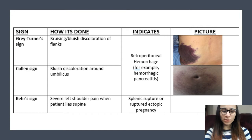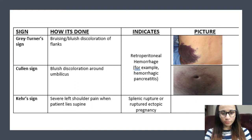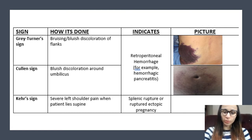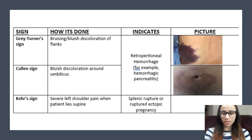Okay, so first we're going to be talking about the Gray-Turner sign. It looks like a bruise on the flank area — the sides where the kidneys are. This could indicate retroperitoneal hemorrhage. There's a picture over there; you can see the big purple bruise on the side of the man. The way I like to remember this is Gray-Turner has the word 'Gray' in it — it's a color — so just think of discoloration.